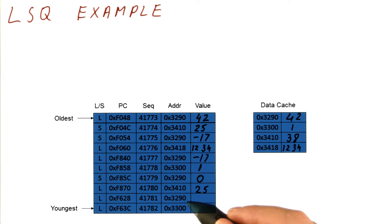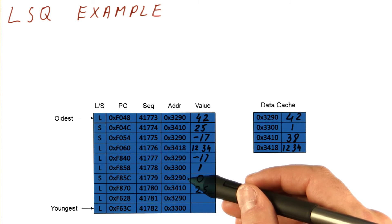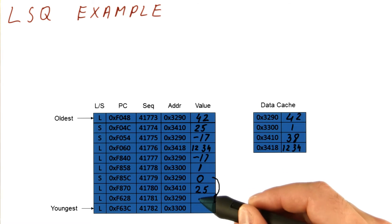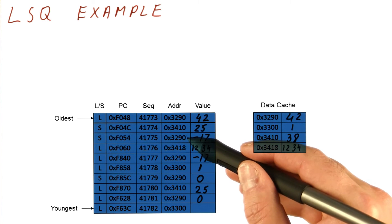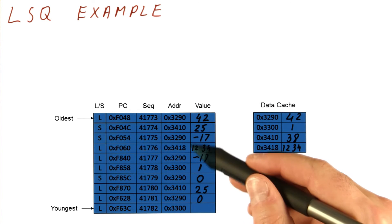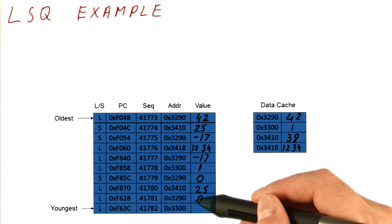Next, we have a load to 3290. It searches the load store queue to find a store that matches this address, and it finds 1 over here. So it just copies the value of 0 here. Note that by now, there have been several stores to 3290. We always want to get the value from the most recent one that still precedes us, because if things were happening in order one at a time, this is exactly what the value should be in the memory location.